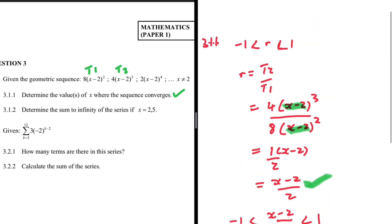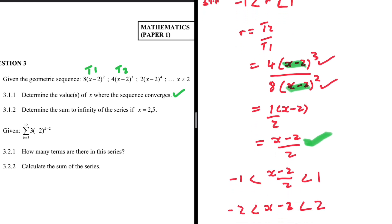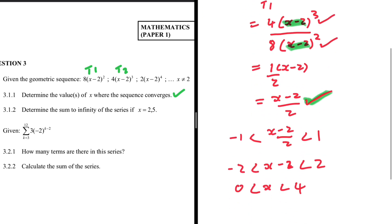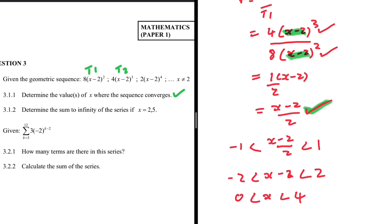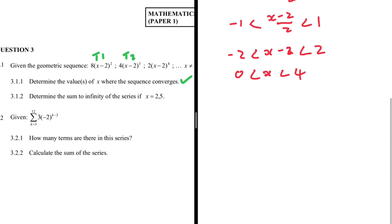Let's verify: t2 is 4(x minus 2) to the power 3, t1 is 8(x minus 2) to the power 2. So 4 divided by 8 is 1 over 2 and we get (x minus 2) on the numerator. Substituting into the inequality and adding 2 on both sides confirms x is between 0 and 4. That is the answer to 3.1.1.